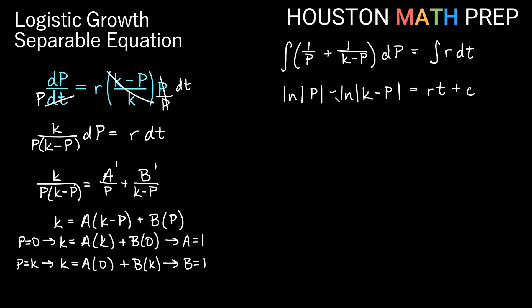Let's do some solving for P now. A little bit of work. So let's go ahead and use properties of logs and combine these. So this would be ln of absolute value. When you have subtract between logs, it becomes divide when you put it in the same log. So that would become P over k minus P is equal to rt plus c.